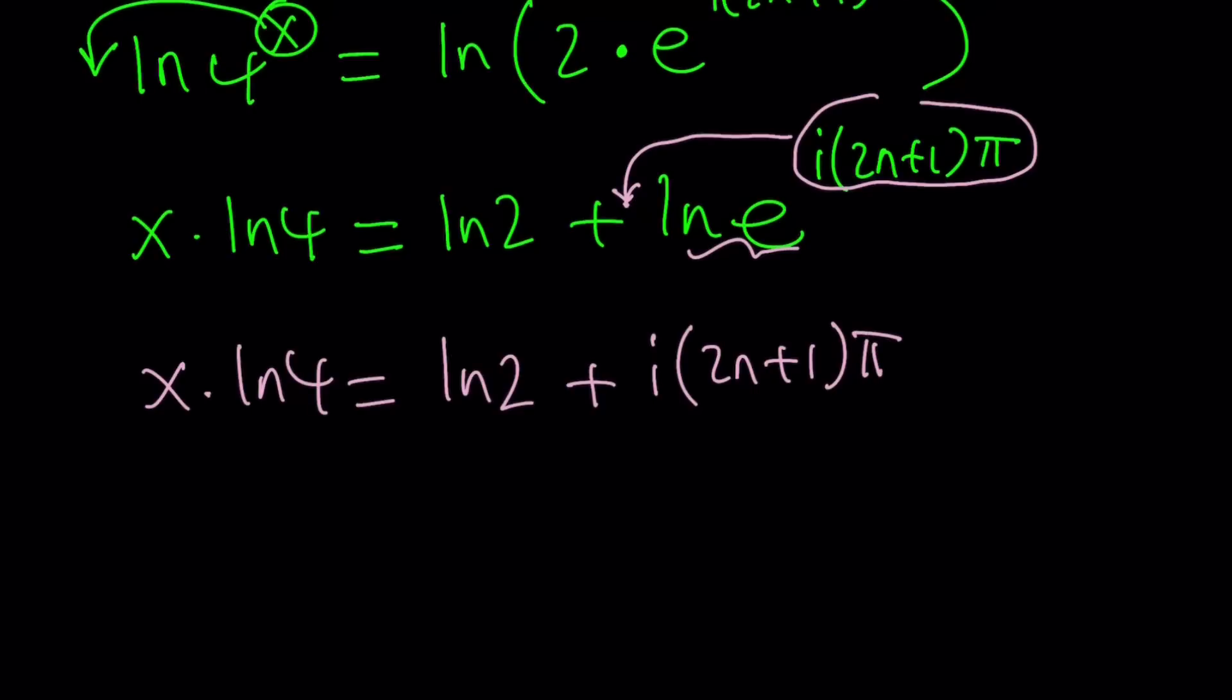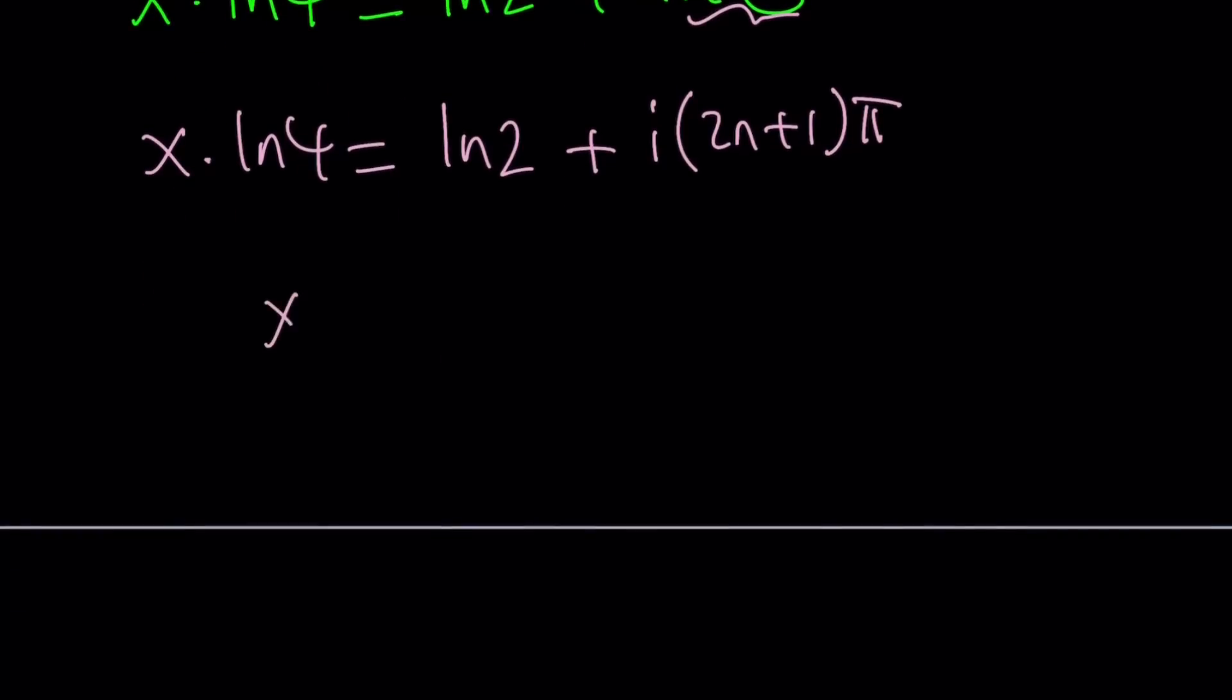Now remember, we're looking for x, right? So let's go ahead and solve for x. That's the only variable here. Well, n does not count as a variable because it's just a dummy integer. So we're going to replace n with anything you want.